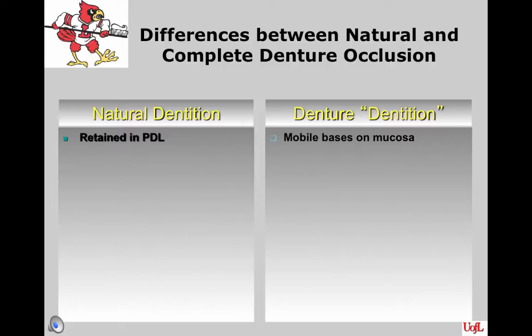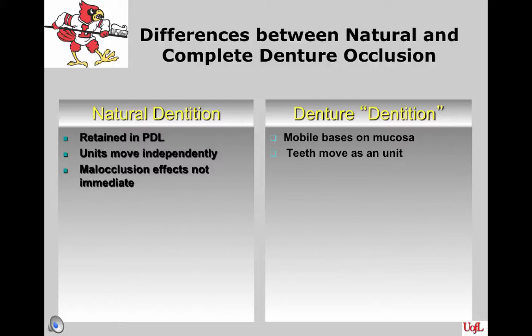In the natural dentition, the units move independently, whereas the teeth move as a unit with the complete denture — one thing affects all of the teeth. The malocclusion effects are not necessarily immediate with natural dentition because those teeth are embedded in bone, whereas malocclusion affects the entire denture base immediately by causing soreness on the ridges.